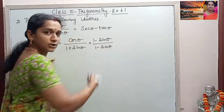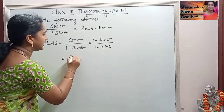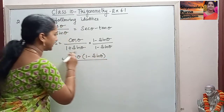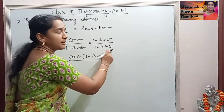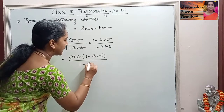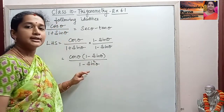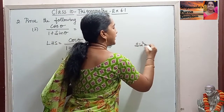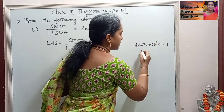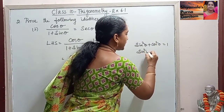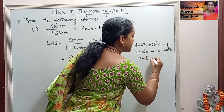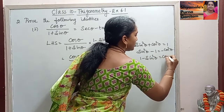Multiplying by 1 minus sine theta, the numerator will be cos theta into 1 minus sine theta, divided by 1 plus sine theta into 1 minus sine theta. Using the identity A plus B into A minus B equals A squared minus B squared, we get 1 minus sine squared theta in the denominator. We also know the identity sine squared theta plus cos squared theta equals 1, which gives us 1 minus sine squared theta equals cos squared theta.